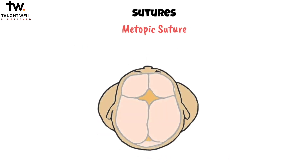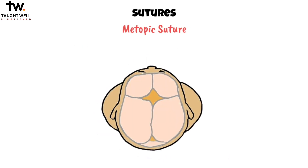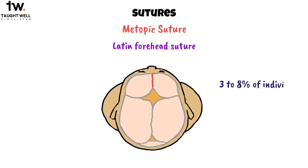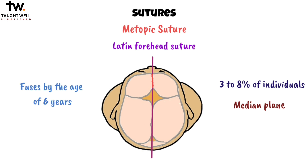Lastly, there's the metopic suture, also known as the frontal suture, which is occasionally present in about 3–8% of individuals. It lies in the median plane and separates the two halves of the frontal bone. Usually, it fuses by the age of 6 years.